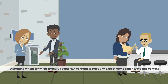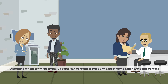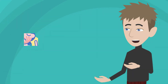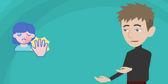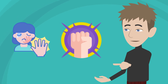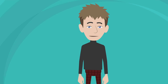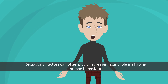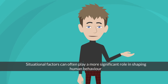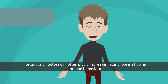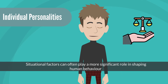The experiment revealed the disturbing extent to which ordinary people can conform to roles and expectations within a specific context, as well as the ease with which they can resort to abusive behaviour when granted power over others. It demonstrated that situational factors can often play a more significant role in shaping human behaviour than individual personalities or morals.